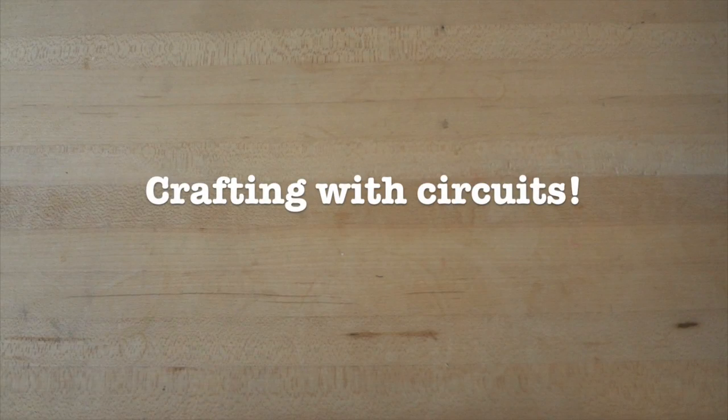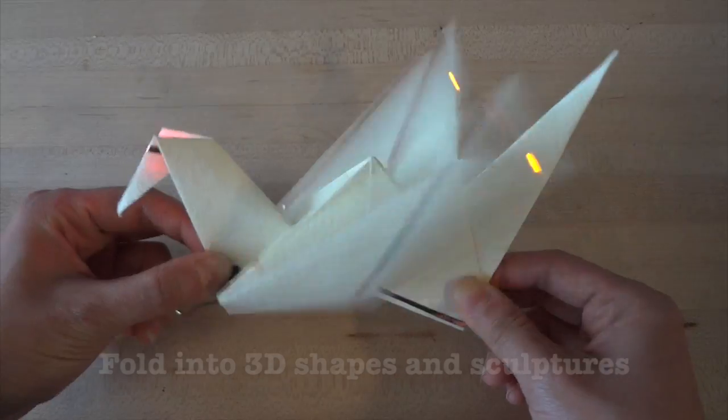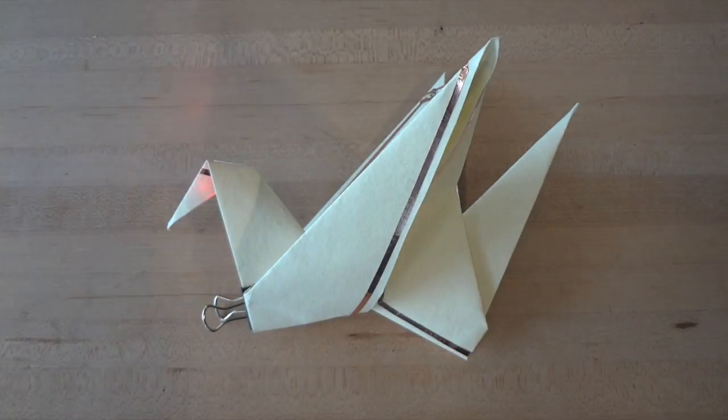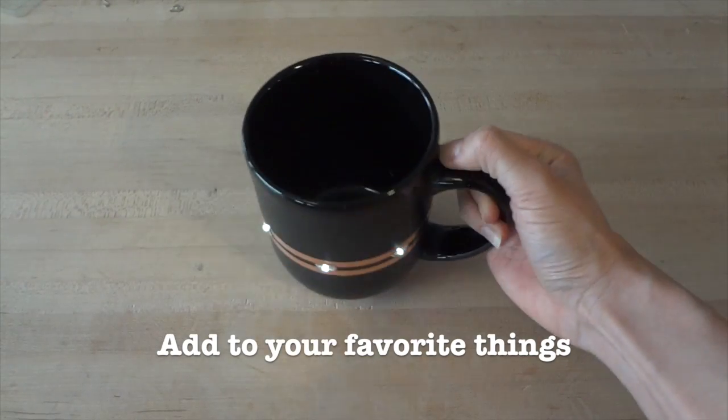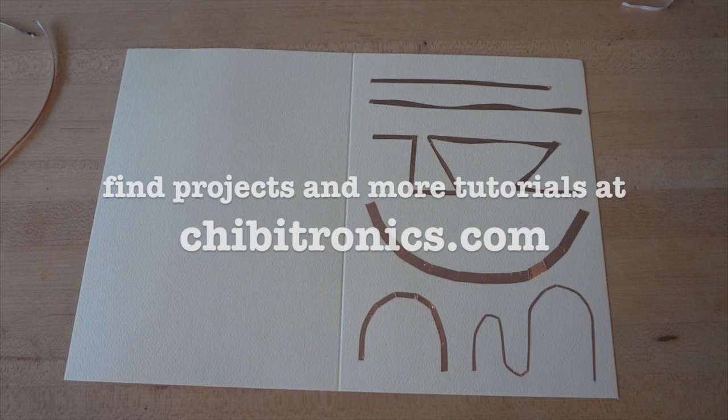Once you're comfortable using copper tape, try crafting circuits. You can make different designs or even write messages with your circuit. You can also bend or fold your circuit, like this circuit origami. Try taping your circuits onto other objects, like your favorite mug. You can even use circuits to decorate your room, like this window mural. Find projects and more tutorials like this one at shibytronics.com. Thanks and happy crafting!